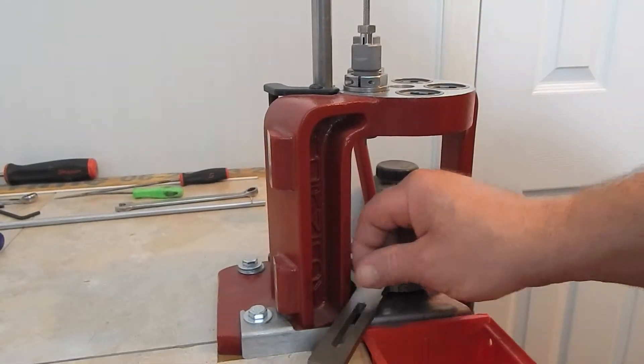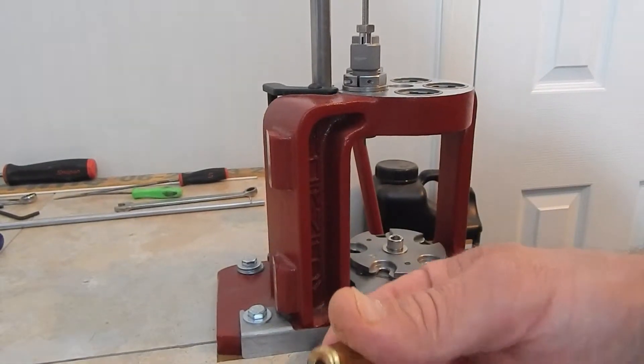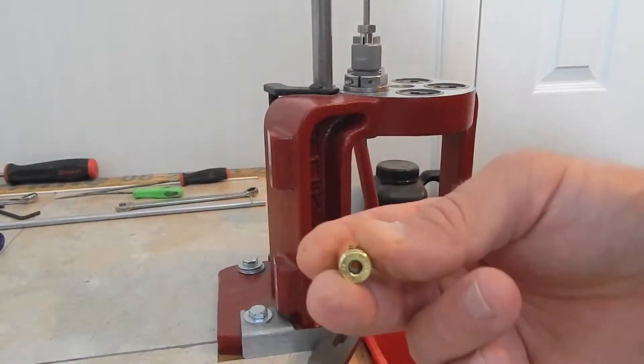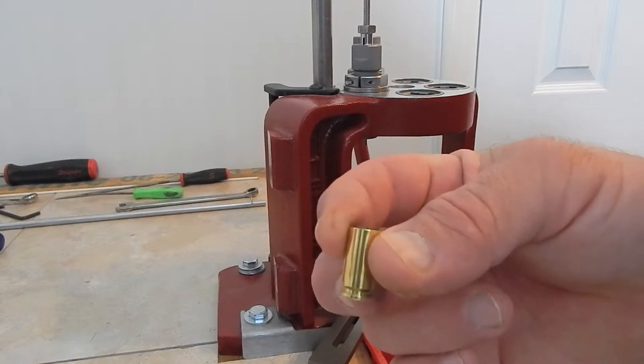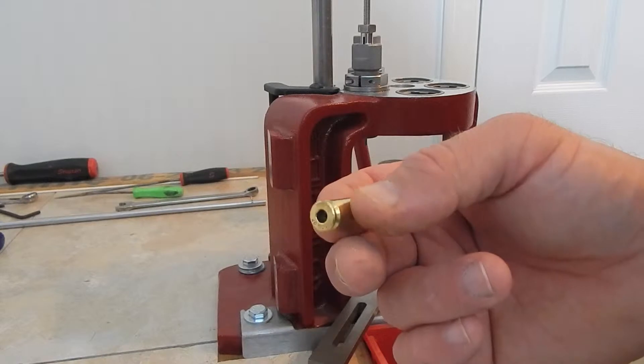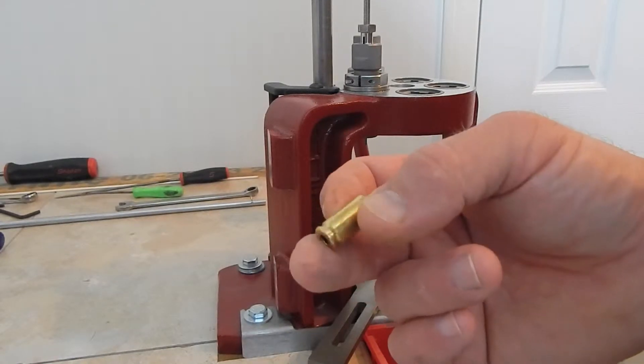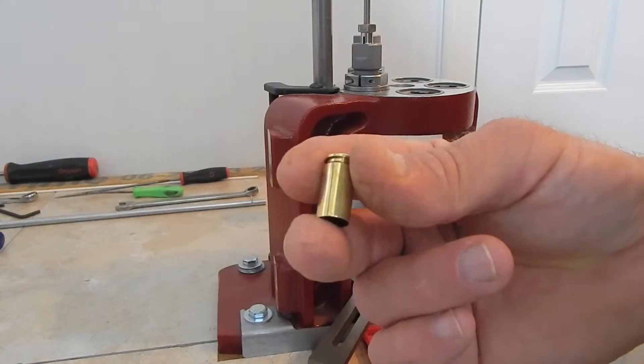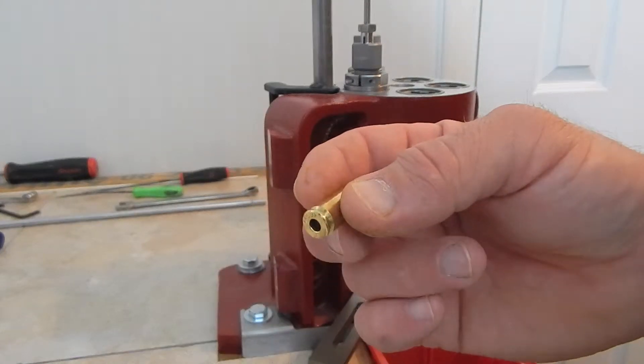First thing I do is grab casings that I've already run through the sizer deprimer die. So I've deprimed and sized them. I tumbled them in a rock tumbler with stainless steel pin media and dishwashing liquid. They're all dry and ready to go.